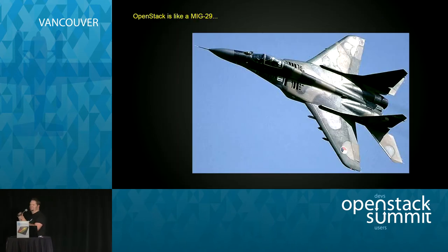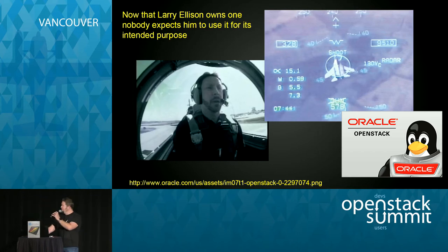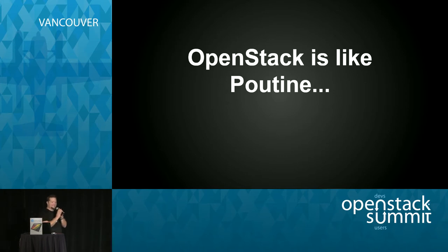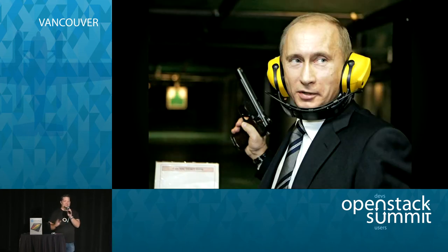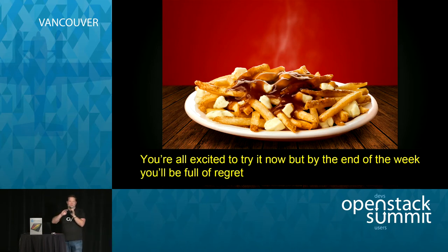OpenStack is like a MiG-29 — it's a beautiful aircraft — but it's like OpenStack because now that Larry Ellison owns one, nobody expects him to use it for its intended purpose. And for our host country — thank you very much for your hospitality, Canada. Why is OpenStack like poutine? Not that poutine — this poutine. Because right now you're all excited to try it, but by the end of the week you're going to be full of regret. Just kidding — they're delicious.